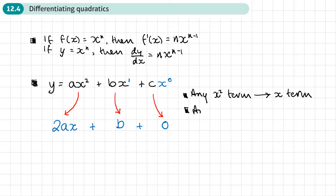Then any x term. So that was the second term in our quadratic. So this term here, what did it become? It just became a number. It became a constant. And that constant is basically the number that was in front of x. So if this was 5x, it becomes 5. If it was negative 2x, it becomes negative 2. So it just becomes a constant.